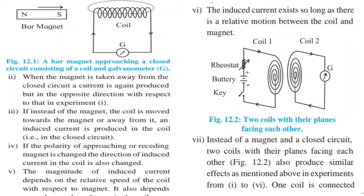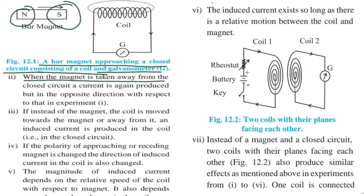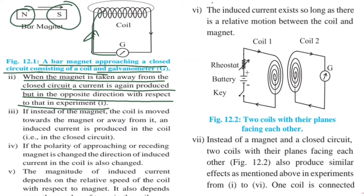The condition shown here is a bar magnet approaching a closed circuit consisting of a coil and galvanometer. The bar magnet, as we know, has a north pole and a south pole. When the magnet is brought nearer to the coil, a current is induced. When the magnet is taken away from the closed circuit, a current is again produced but in the opposite direction — the flow reverses from right to left.